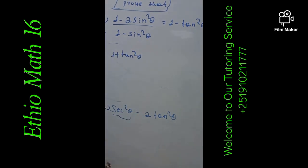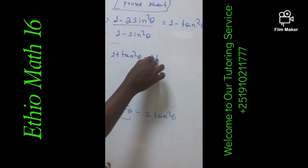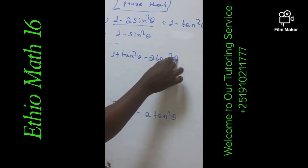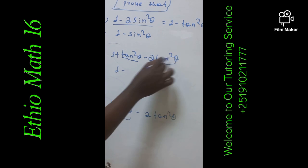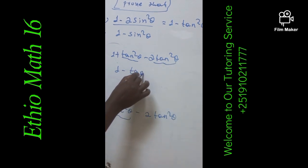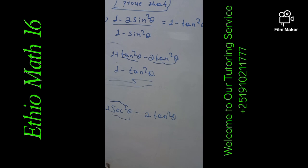So plugging in, we have (1 plus tan²θ) minus 2tan²θ, and this is going to be 1 minus tan²θ. So 1 minus 2tan²θ over 1 minus tan²θ is equal to 1 minus tan²θ. This is all about our today's lesson.